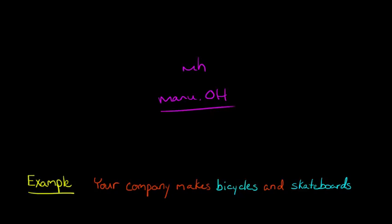You'd take whatever your manufacturing overhead is — let's say it's X — divide that by the number of machine hours, and get a certain rate, like $13 a machine hour. Each time you have machine hours, you allocate that to the products you're making. But machine hours is just one measure of what might drive overhead. There are a lot of things that might affect overhead that have nothing to do with machine hours — it's just an easy proxy. But what if there were four, five, or ten things driving manufacturing overhead?